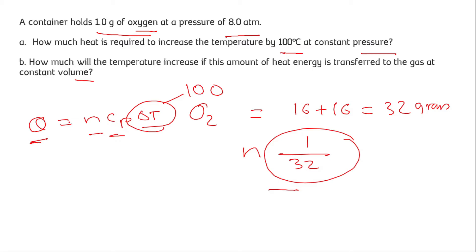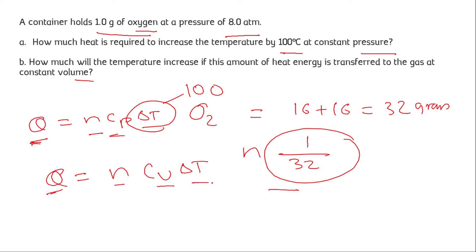We then calculate the change in temperature at constant volume. For a gas at constant volume, the heat equation is Q = nCvΔT. The value of Q is the same for both conditions, the number of moles is known, and the value of Cv is given in the question. From here we can easily find the change in temperature.